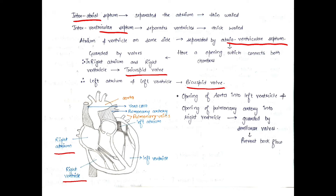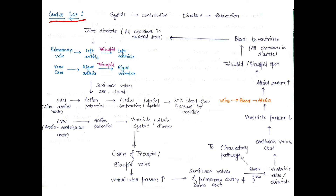The right atrium and right ventricle are connected through an opening guarded by the tricuspid valve. The left atrium and left ventricle are connected through an opening guarded by the bicuspid valve. These valves prevent backflow of blood from the ventricles back into the atria, ensuring one-directional blood flow.